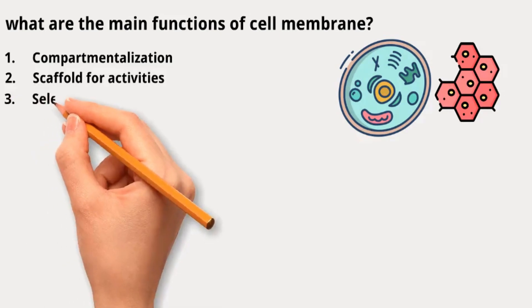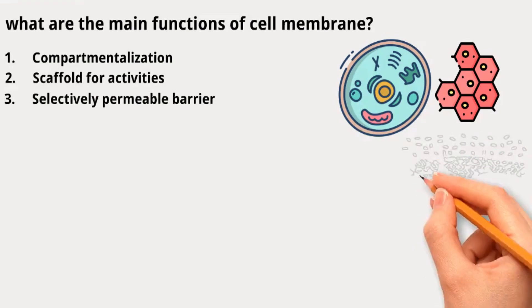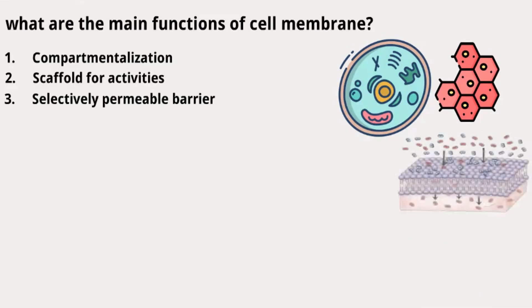Third, selectively permeable barrier: membranes act as barriers controlling what goes in and out of a cell. They are like moats around castles, allowing specific elements to pass through gated bridges while blocking others.